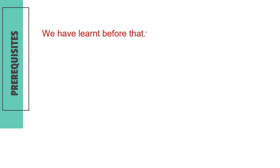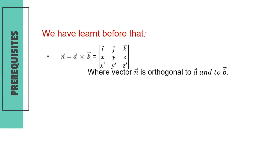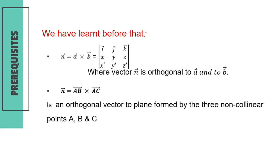Prerequisites. We have learned before that if N equals the cross product of A and B, then vector N is orthogonal to the two vectors A and B. If N equals the cross product of AB and AC, then N is the orthogonal vector to the plane formed by the three non-collinear points A, B, and C.